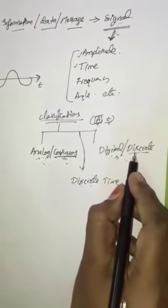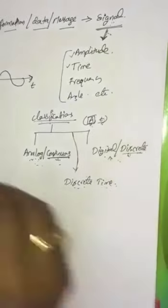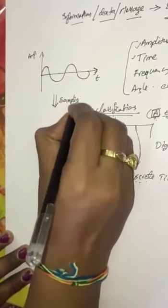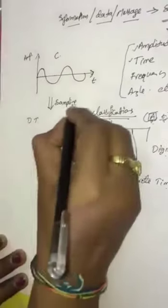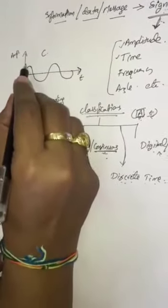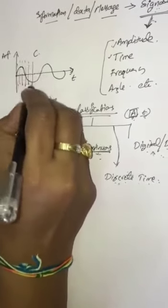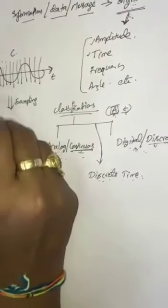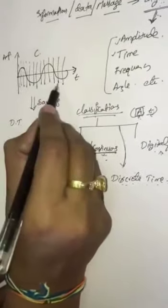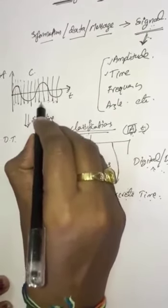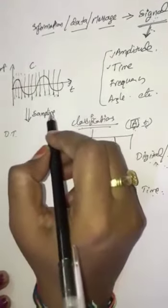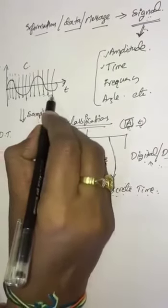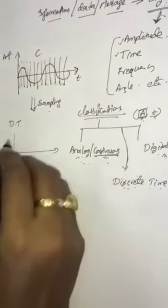Now moving to the discrete time signal. Before knowing the discrete signal, we should know the discrete time signal. The technique used to convert a continuous signal into a discrete time signal is called sampling. Sampling means making the signal into samples — just as we slice a loaf of bread into slices. The sampling is done at uniform intervals of time. After sampling, the signal will be sampled at those uniform intervals.